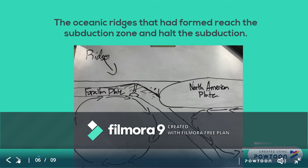The oceanic ridges that had formed in the Pacific Ocean reached the subduction zone between the Farallon and North American Plates. They were so massive that they stopped subduction completely and forced the two plates to find a new way to move.